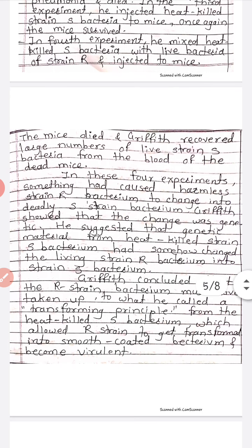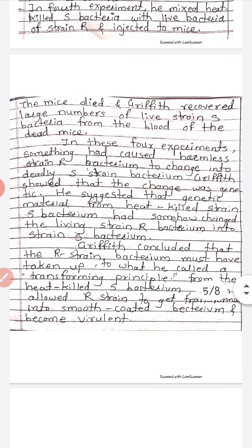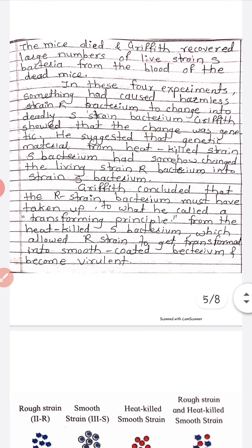In these four experiments, something had caused the harmless strain R bacterium to change into the deadly S-strain bacterium. Griffith concluded that the R-strain bacterium must have taken up what he called a transforming principle from the heat-killed S bacterium.